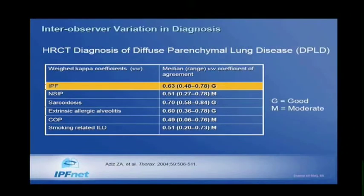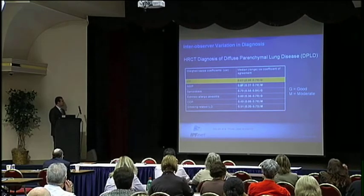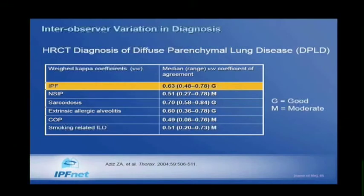A study by Aziz in Thorax 2004 looked at how well thoracic radiologists agreed when reviewing patients with several different types of diffuse parenchymal lung disease. For IPF, they were pretty good, with a correlation coefficient of 0.63. NSIP was moderate. Sarcoidosis and hypersensitivity pneumonitis were pretty good. Smoking-related ILD and COP had moderate correlations. So in patients thought to have IPF by high-resolution CT scan, radiologists often agree, and high-res CT is very useful in coming up with these diagnoses.